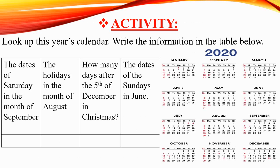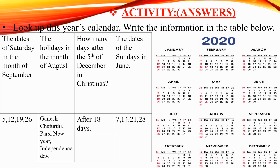So students, now it is activity time. Look up this year's calendar and write the information in the table below. You have to write: the dates of Saturdays in the month of September, the holidays in the month of August, how many days after the 5th of December is Christmas, and the dates of the Sundays in June. Here is the answer for the activity — you don't have to copy it, just check whether you have written it right.